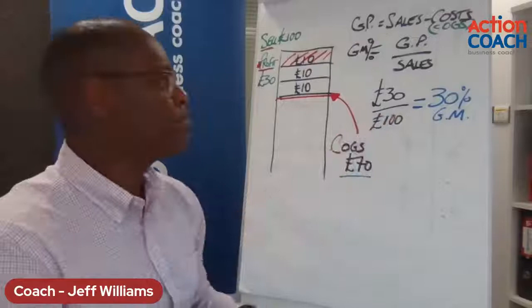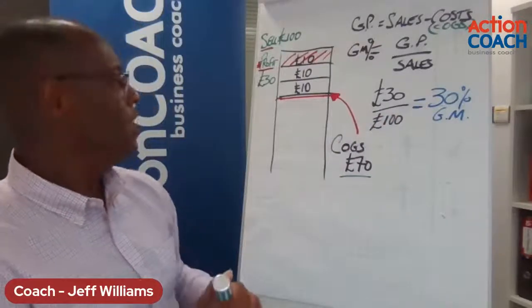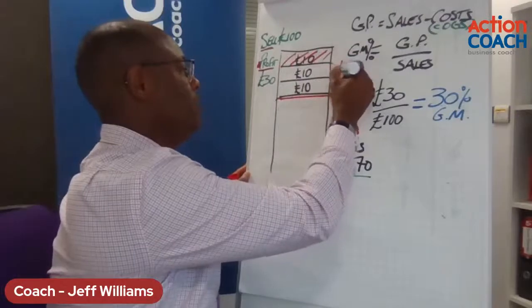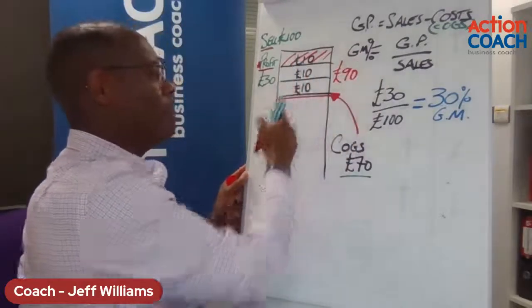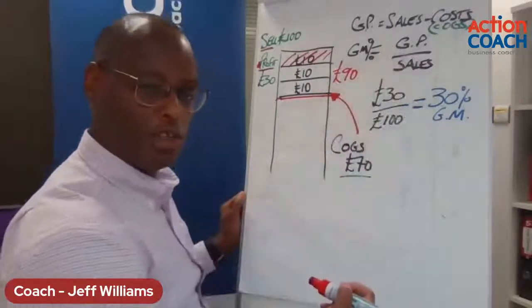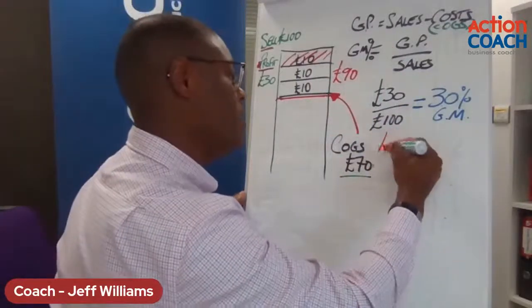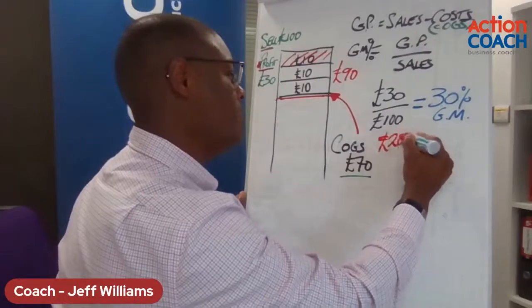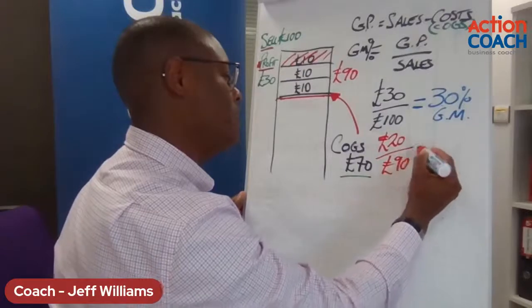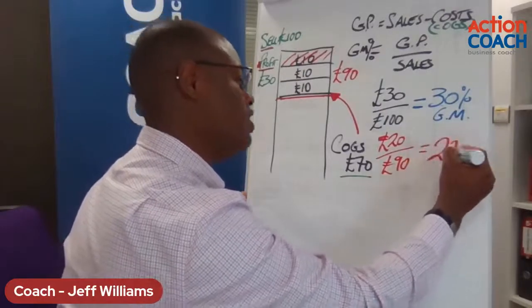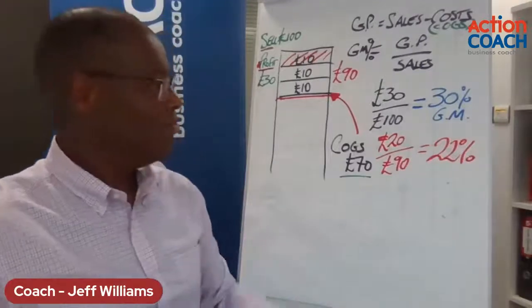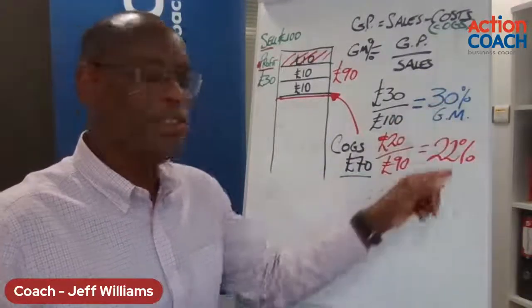So let's work out the new gross profit margin. The price has been discounted to £90, and you're now left with a £20 profit. The new gross margin would be £20 — your gross profit — divided by your new sale price of £90, which comes out at a 22% gross margin. You've slashed it from 30% to 22% just by giving what you thought was a small 10% discount.